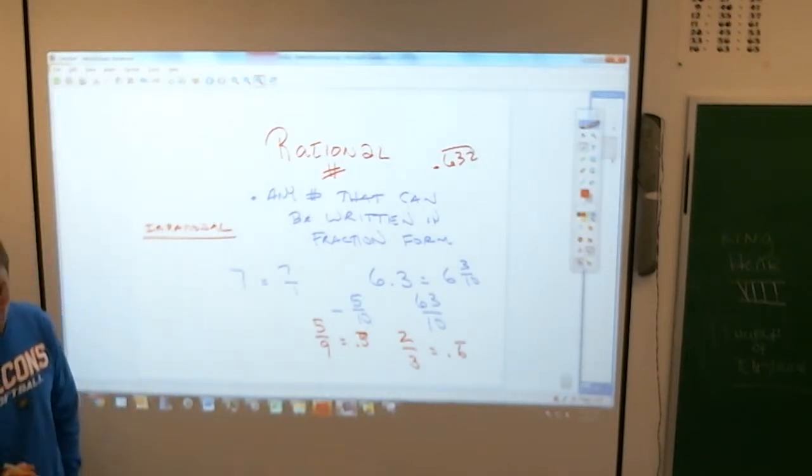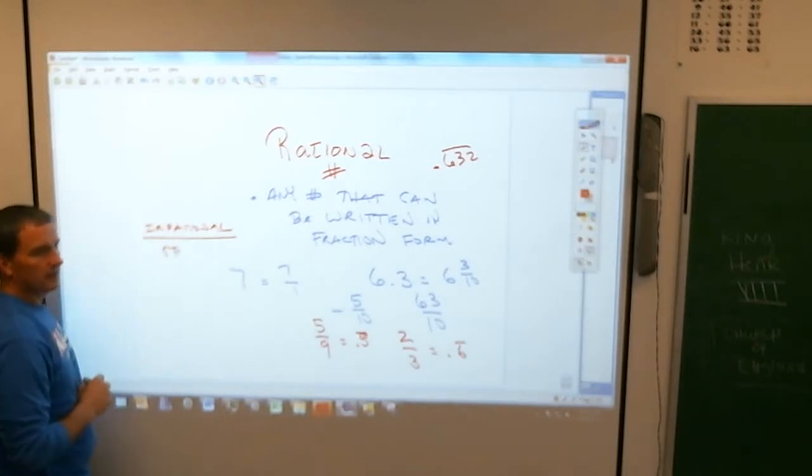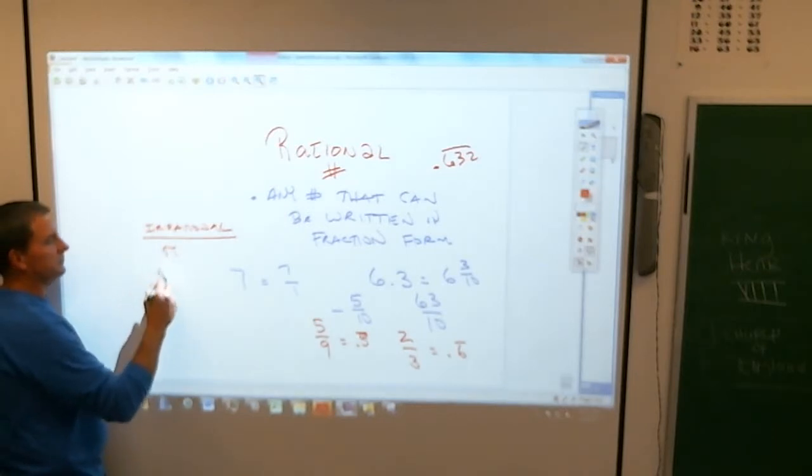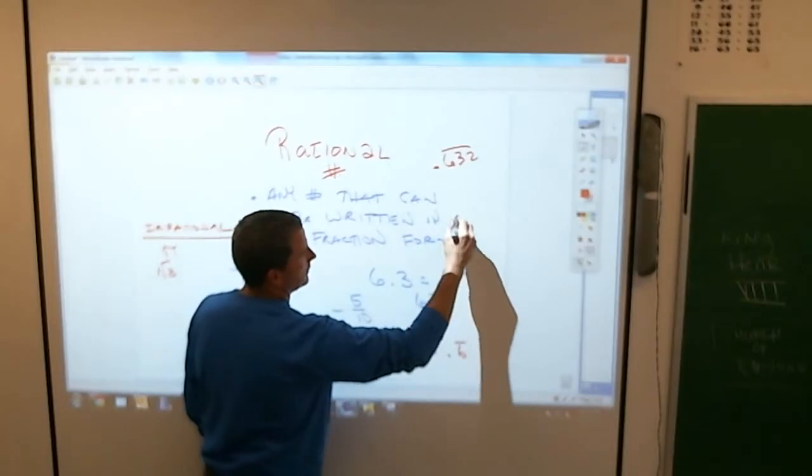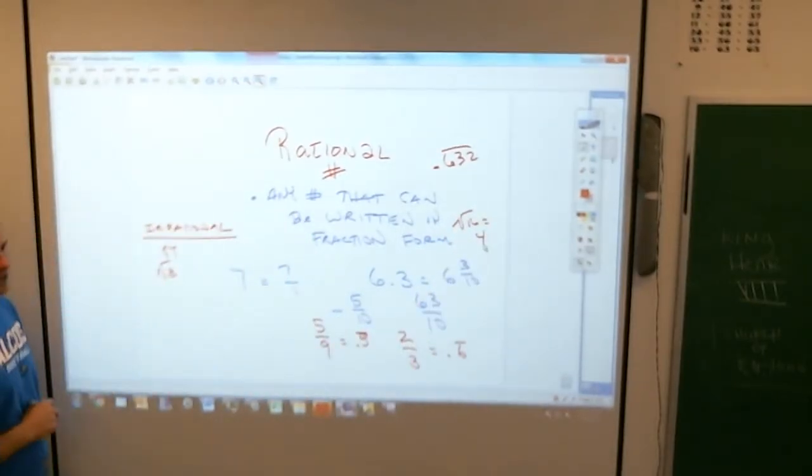What are numbers that aren't rational? Wade? Pi. Pi is one of them. Faith? Square roots. Square roots that don't work out. The square root of 16 is rational because it's 4, but the square root of 3 is not because it doesn't work out.